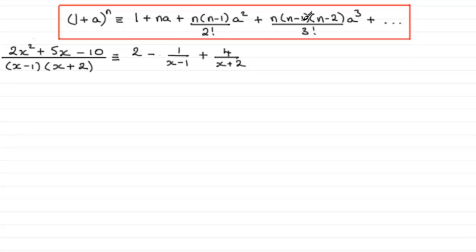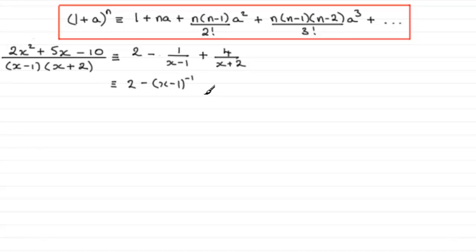Before we can use this formula we need to modify these two terms. Starting with the first: we have minus (x minus 1) to the power minus 1, and for the other term we have plus 4 multiplied by (x plus 2) to the power minus 1.